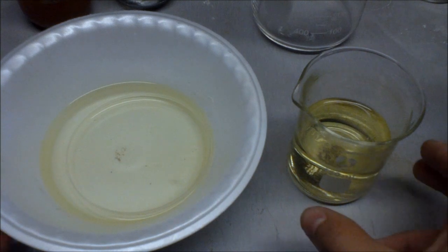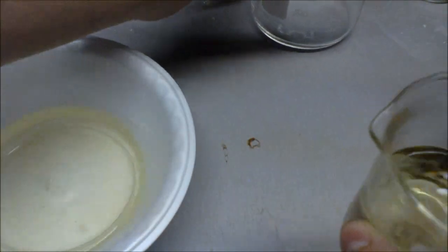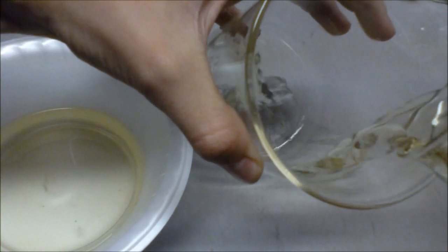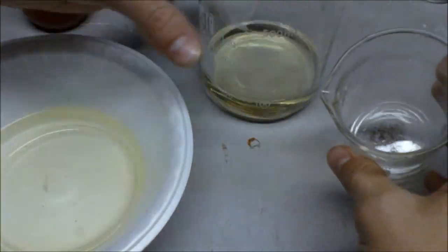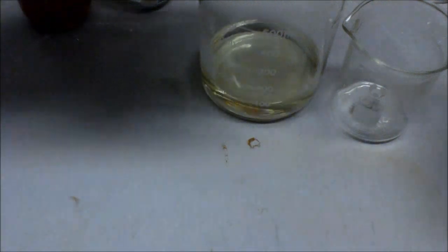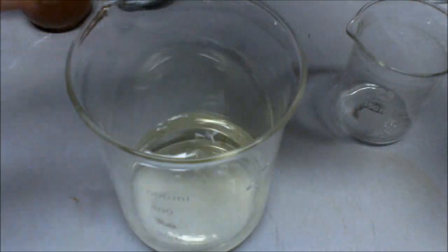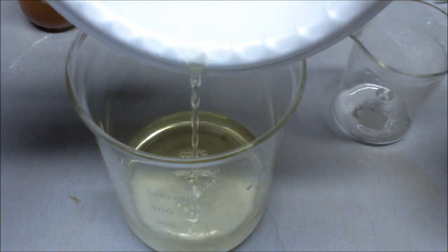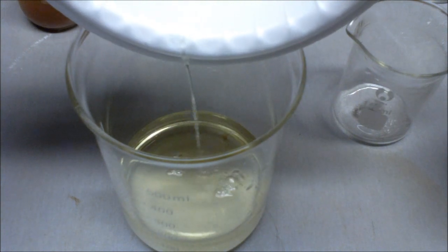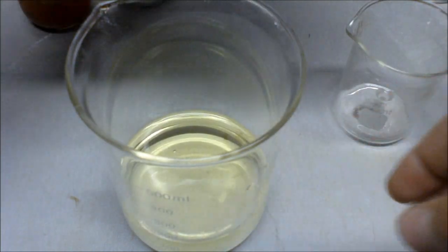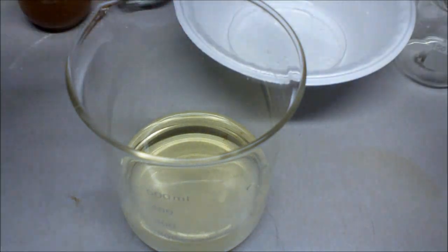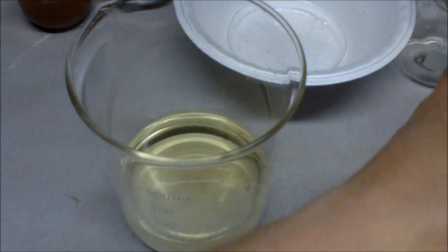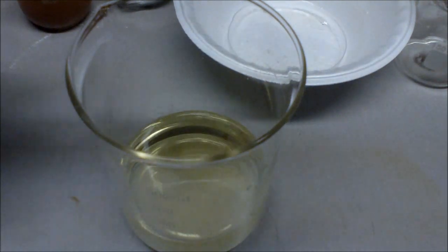Now I am going to decant the solutions into a larger beaker so I can neutralize the oxalic acid. Now I am going to add baking soda into this solution until the bubbling stops.